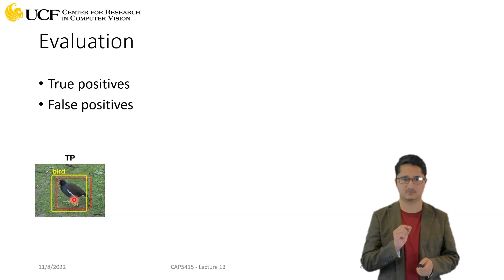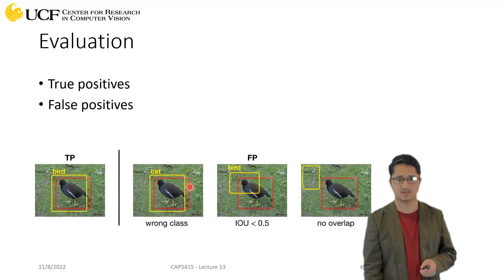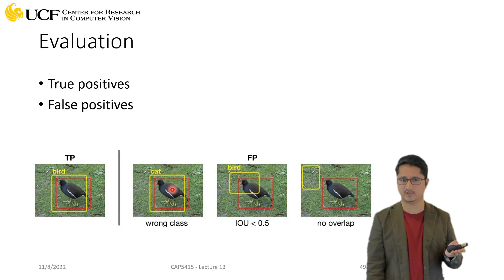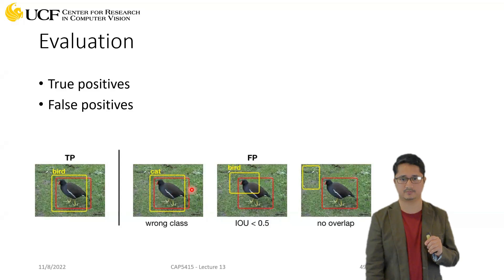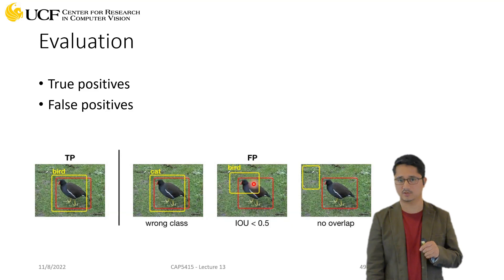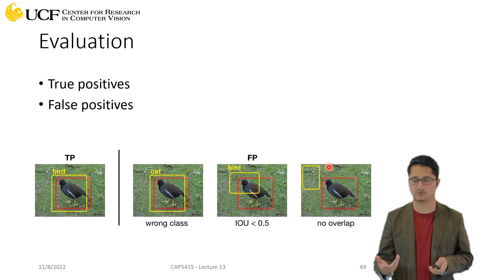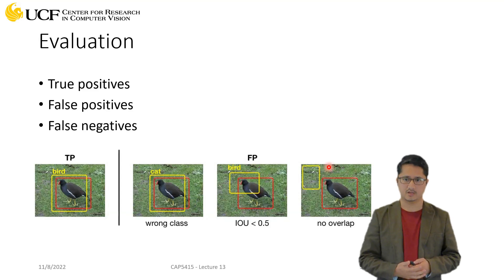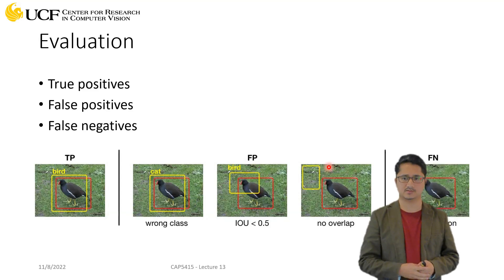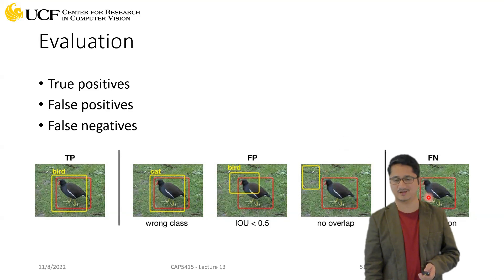There are also false positives, with many variations. Your IoU might clear the threshold — greater than 0.5 — but the model says it's a cat, not a bird: that's a false positive. Or your network says the bounding box is a bird, but the IoU is less than 0.5: also a false positive. If there is no overlap at all, that's a false positive too.